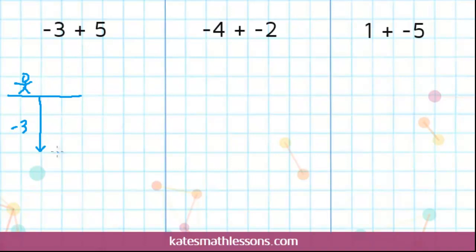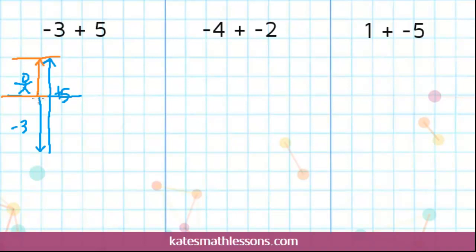You're adding a positive 5, and when you're adding a positive, you want to think of that as going up. So you would go up 5 units: 1, 2, 3, 4, 5. So this represents the plus 5. When you give your final answer, you want to think about where you started — here at ground level — and where you ended up. You ended up going up 2 from where you started, so your final answer would be a positive 2. You ended up 2 units higher than where you were at the beginning.